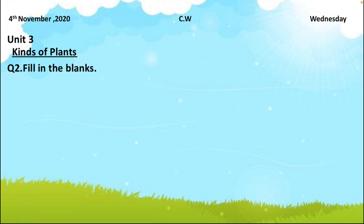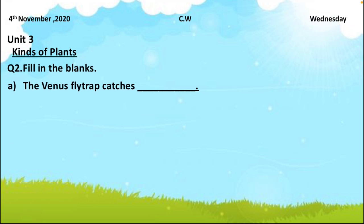Question number two is fill in the blanks. Statement A: the Venus fly trap catches blank. The Venus fly trap is a kind of pitcher plant. From the name you can see 'fly trap' — it catches flies, and flies are insects. So the answer is: the Venus fly trap catches insects.